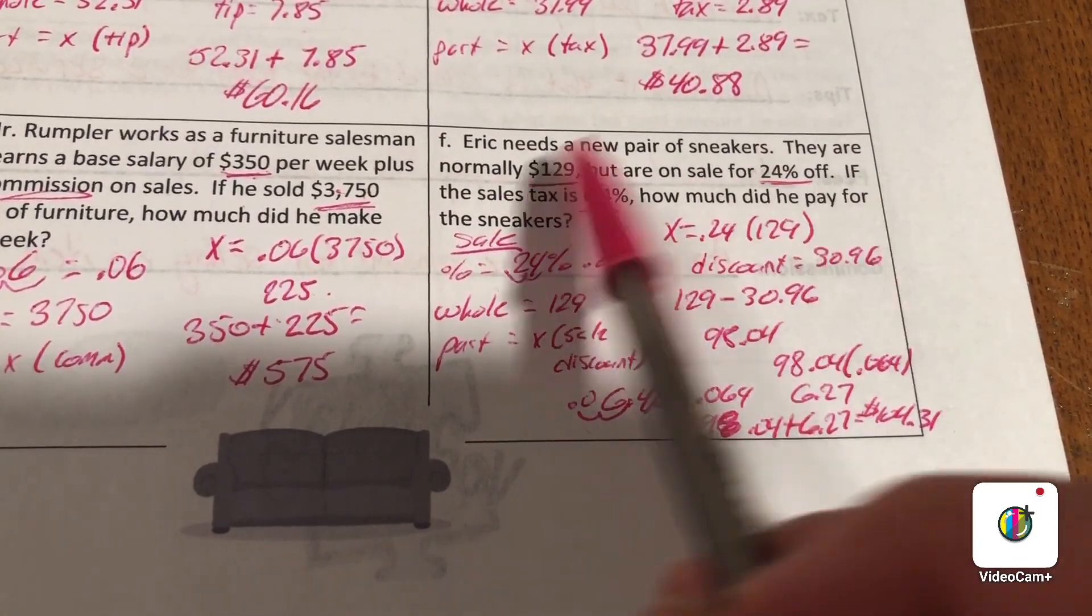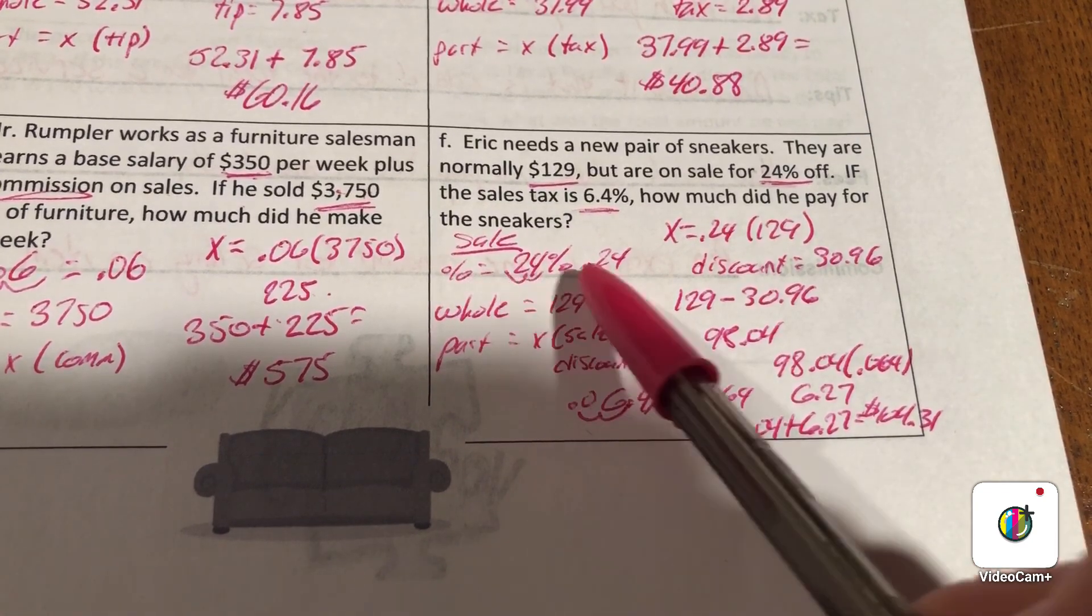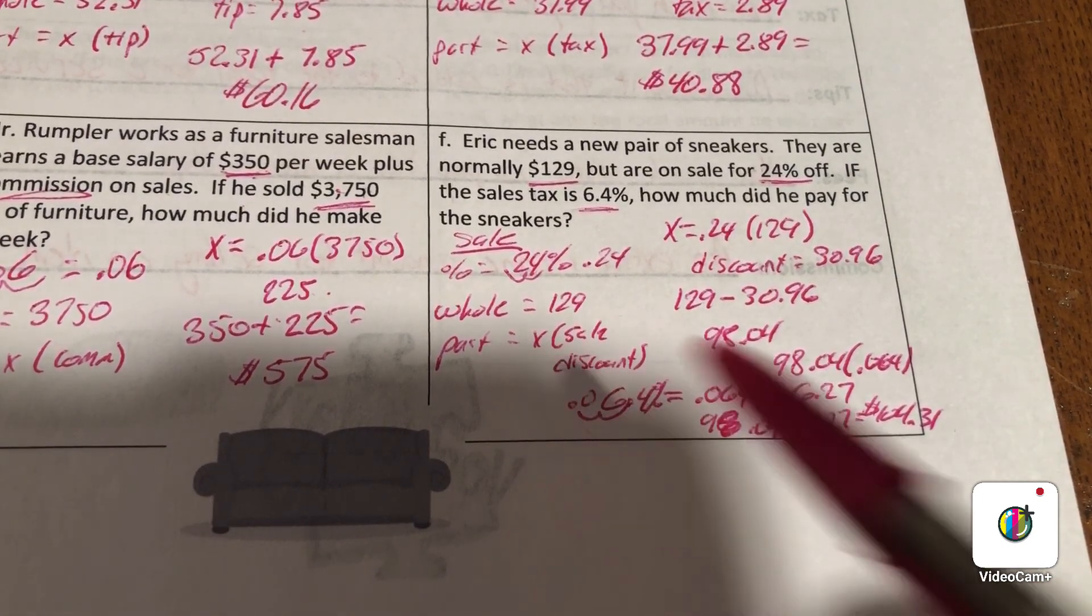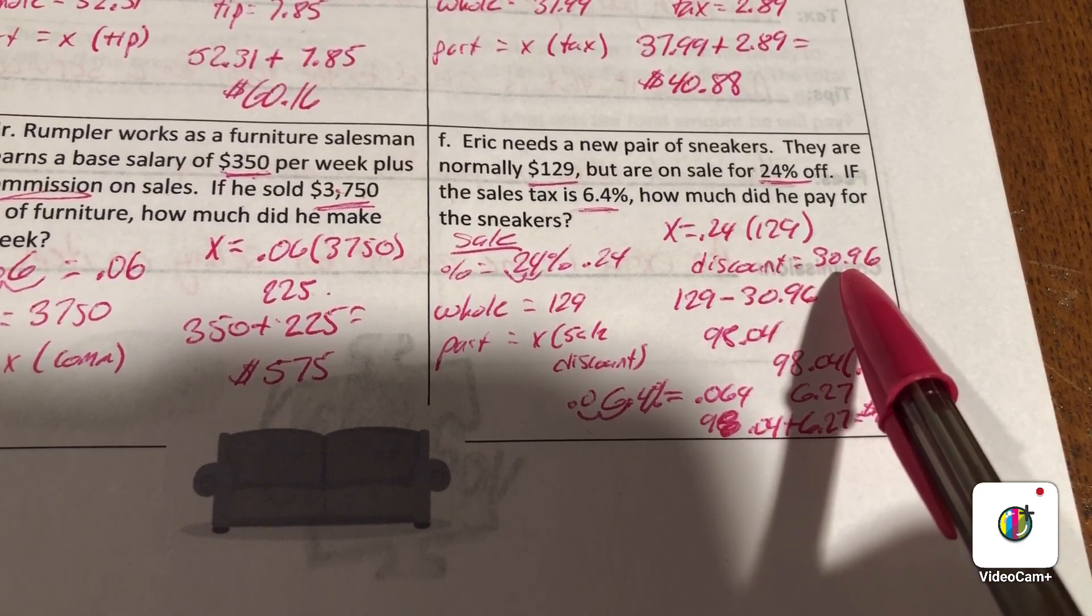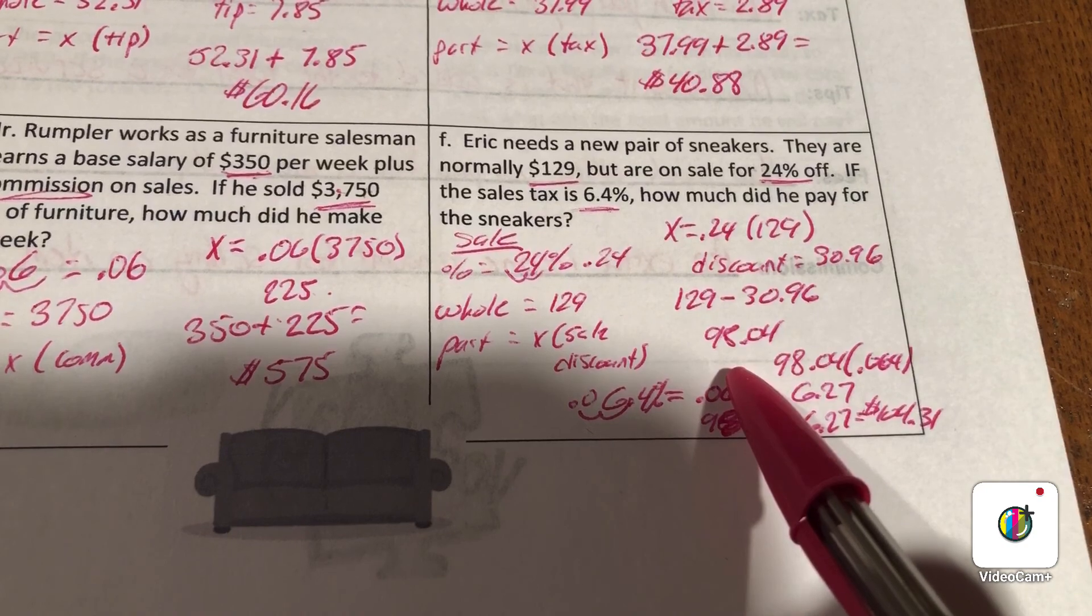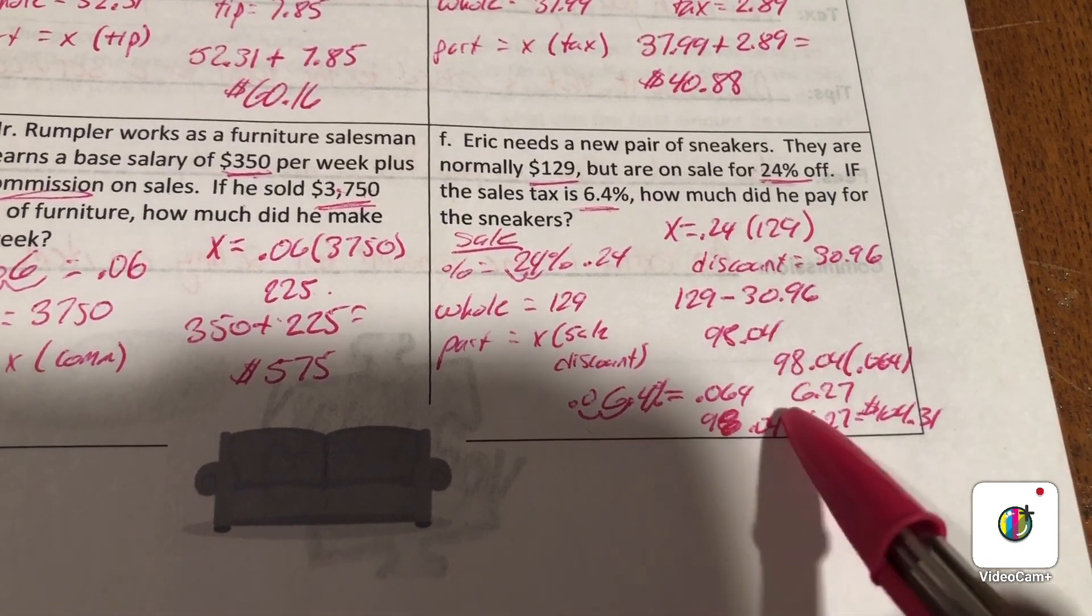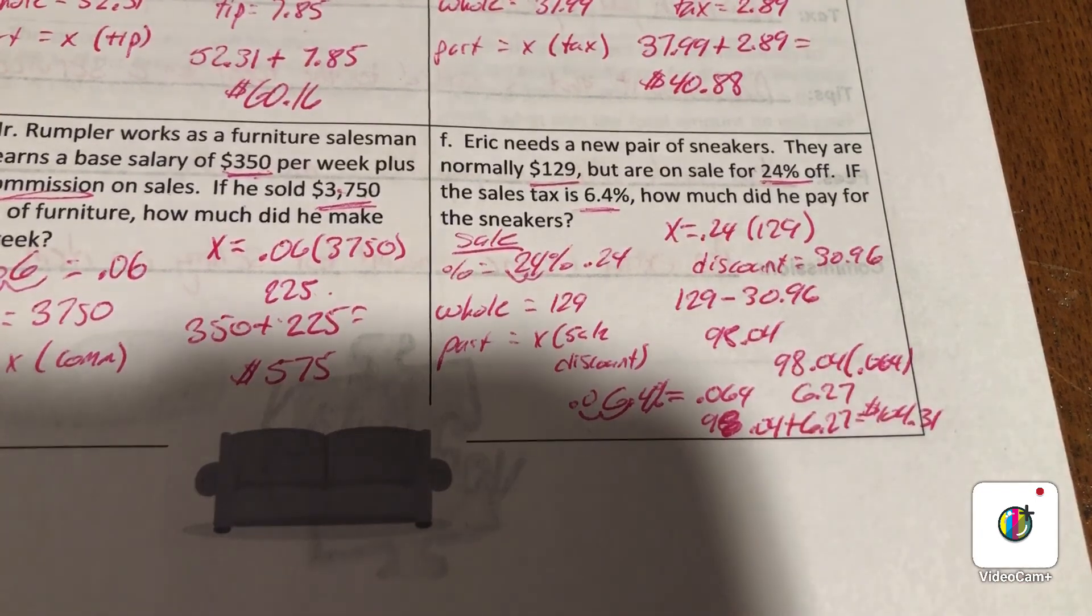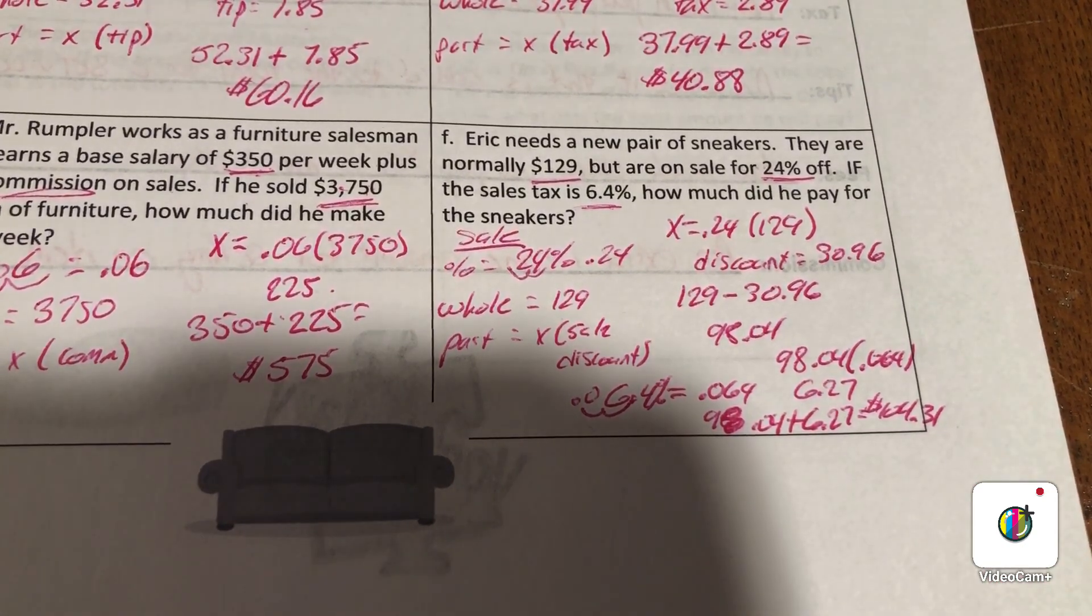Eric needs a new pair of sneakers. They are normally $129 but are on sale for 24% off. The sale is 24%, so make that 0.24. The whole is $129, and the discount is what we're looking for. So 0.24 times $129 gives us a discount amount of $30.96. Subtract these two and you get the original minus the discount, which is $98.04. But now it says there's a sales tax of 6.4%, so 0.064 times the new sale price $98.04 gives us $6.27 - that's how much he'll pay in tax. So it's our sale price $98.04 plus the tax $6.27, which gives us $104.31.